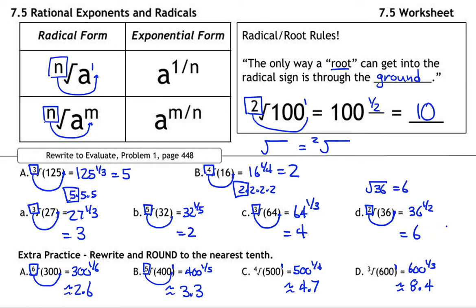All right, friends. That's about it in terms of rewriting going from radical to exponential. Basically, the only way that the root, the number on the outside of the radical sign, the only way that it can get into the radical sign is through the ground. So it sneaks in from the ground. You rewrite. Simplify when you can. All right. See you in class.